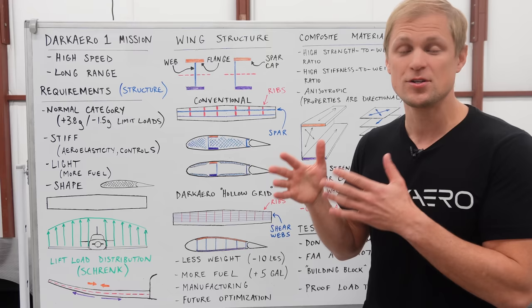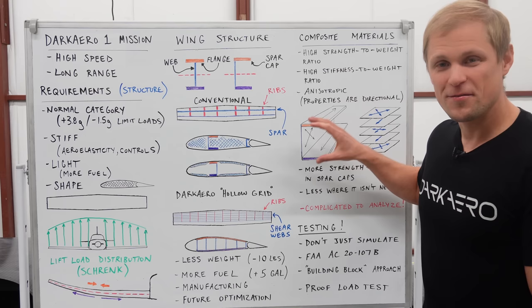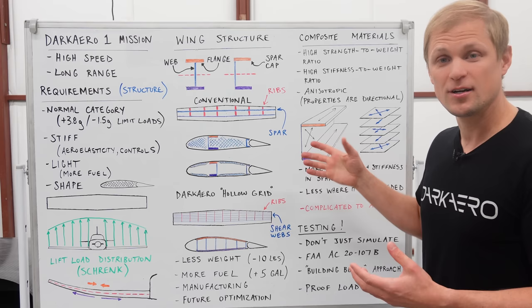For example, in the spar we can orient fibers in the spanwise direction within the spar caps to better resist the tensile and compressive loads that show up in the spar caps. In the shear web of the spar, we can orient our fibers at plus and minus 45 degrees relative to the span direction of the spar because that's the direction of our highest stresses in the shear web.